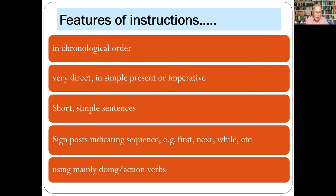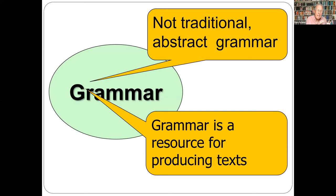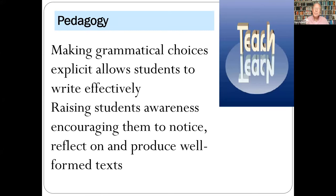Genres encourage us to look for patterns — repeated uses of language to see how we typically create meanings. In the classroom, this means attending to grammar, but not the old traditional grammar of the writing-as-object approach. Here, grammar is a resource for producing texts. A knowledge of grammar shifts writing from the implicit and hidden to the explicit and conscious — something we can use to write effectively. In class, this often involves consciousness raising: getting students to notice, reflect on, and then use writing conventions.